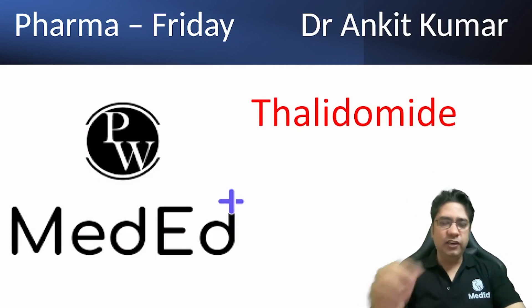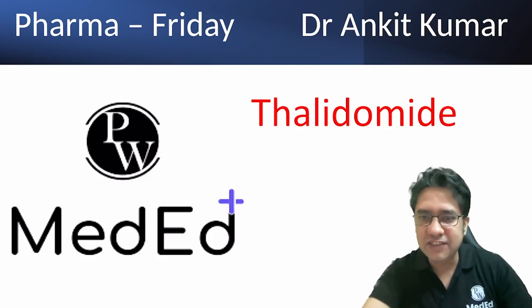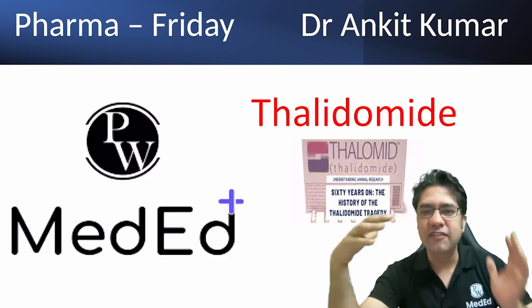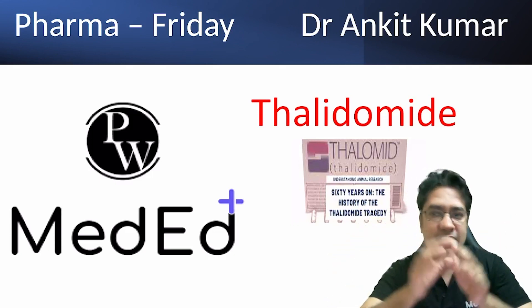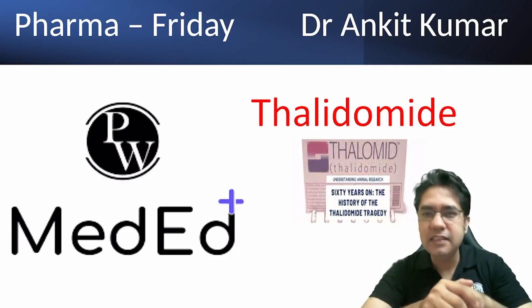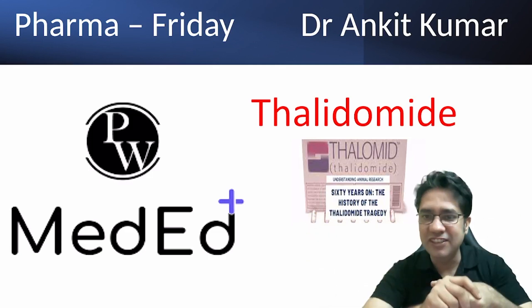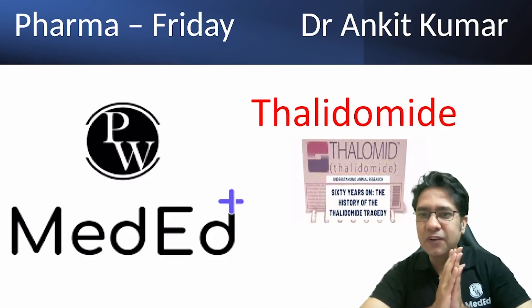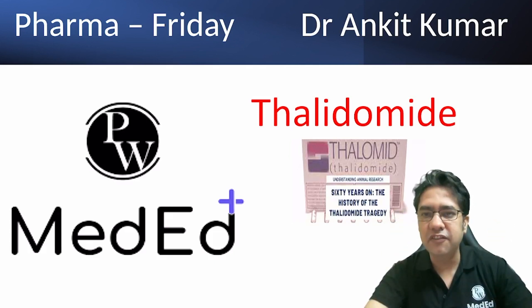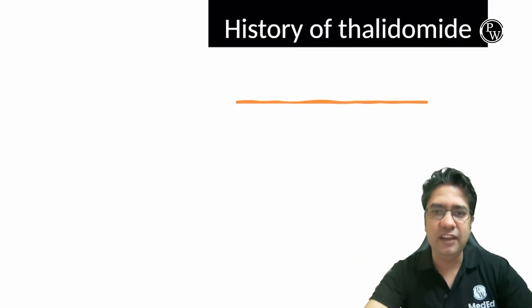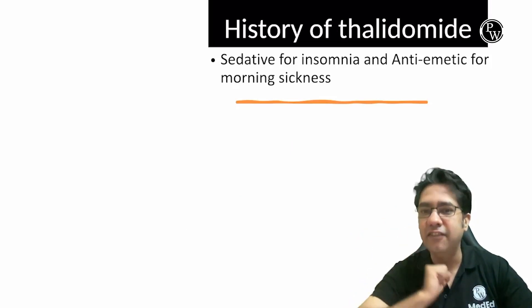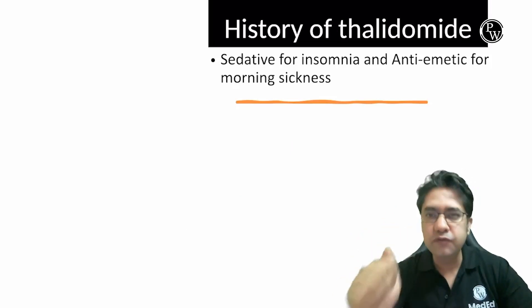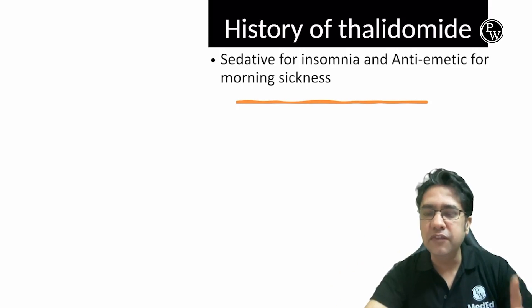Thalidomide has a very interesting history. It was developed for some different condition and later on, nowadays it is used in some other condition. First let's talk about the bad history of Thalidomide. Thalidomide was developed as a sedative drug and it was used for the treatment of insomnia.